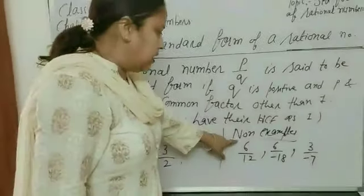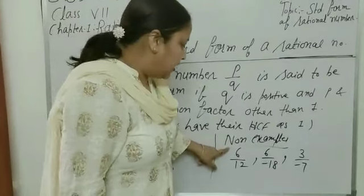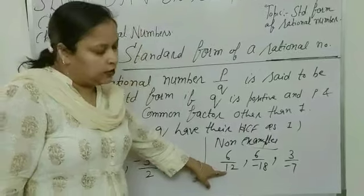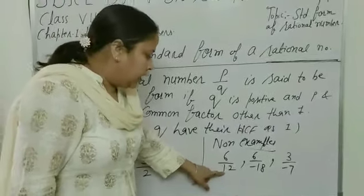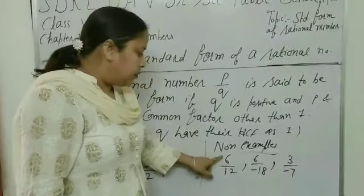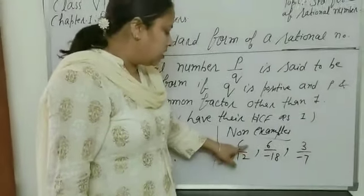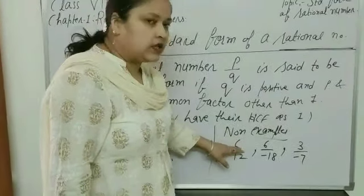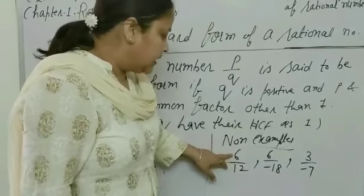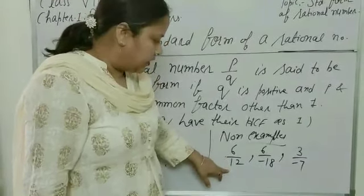Next, non-examples — meaning numbers which are not in Standard Form. Take 6 upon 12. First of all, we check the denominator: it is positive. But 6 and 12 have common factors 2, 3, and 6, which are other than 1. Therefore, 6 upon 12 is not in Standard Form.